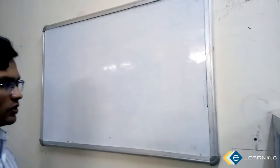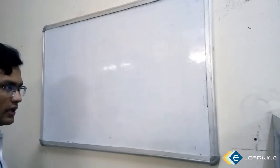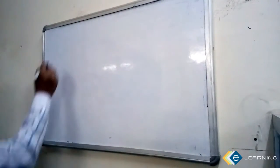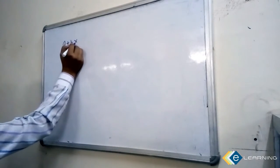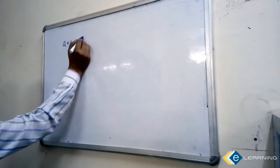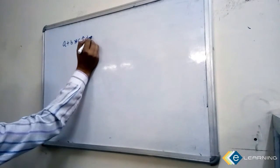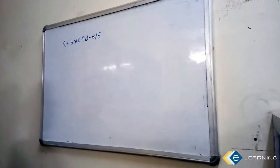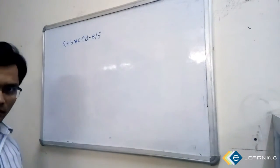In this video, we are going to discuss how to construct an expression tree of the given valid expression. For example, suppose the expression is given to you: A plus B star C power D minus E divided by F. This is the algebraic expression and you need to construct an expression tree.